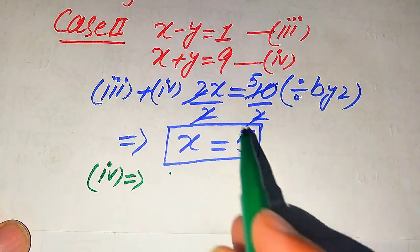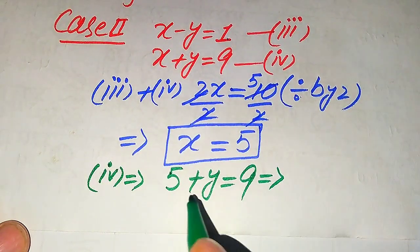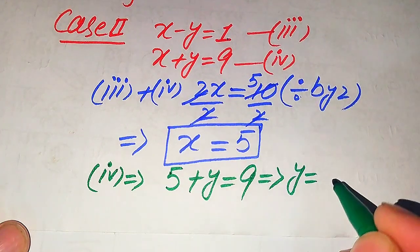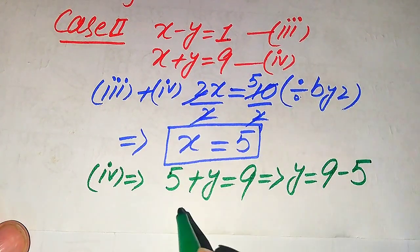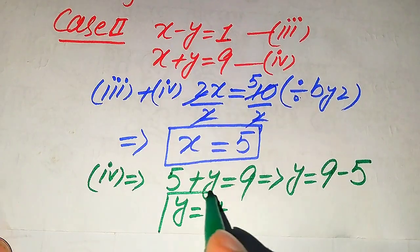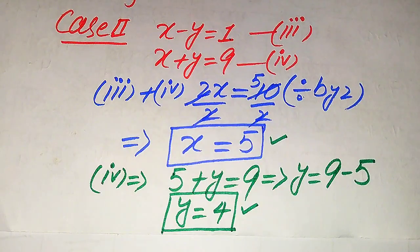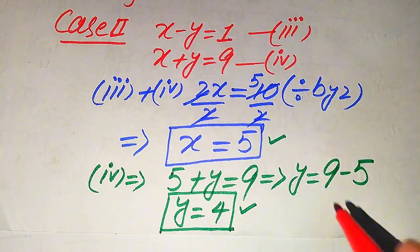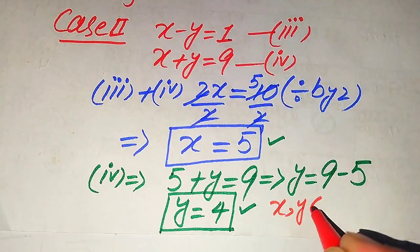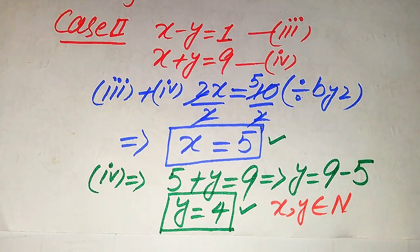Substituting x = 5 into equation 4: 5 plus y = 9. Moving 5 to the right hand side, y = 9 minus 5 = 4. So x = 5 and y = 4. Both values are natural numbers, so these are the final values of x and y. This is our final answer. Thank you for watching — please subscribe to my channel for more exciting videos.